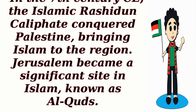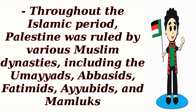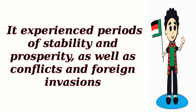In the 7th century CE, the Islamic Rashidun Caliphate conquered Palestine, bringing Islam to the region. Jerusalem became a significant site in Islam, known as Al-Quds. Jerusalem was ruled by various Muslim dynasties, including the Umayyads, Abbasids, Fatimids, Ayyubids, and Mamluks. It experienced periods of stability and prosperity, as well as conflicts and foreign invasions.